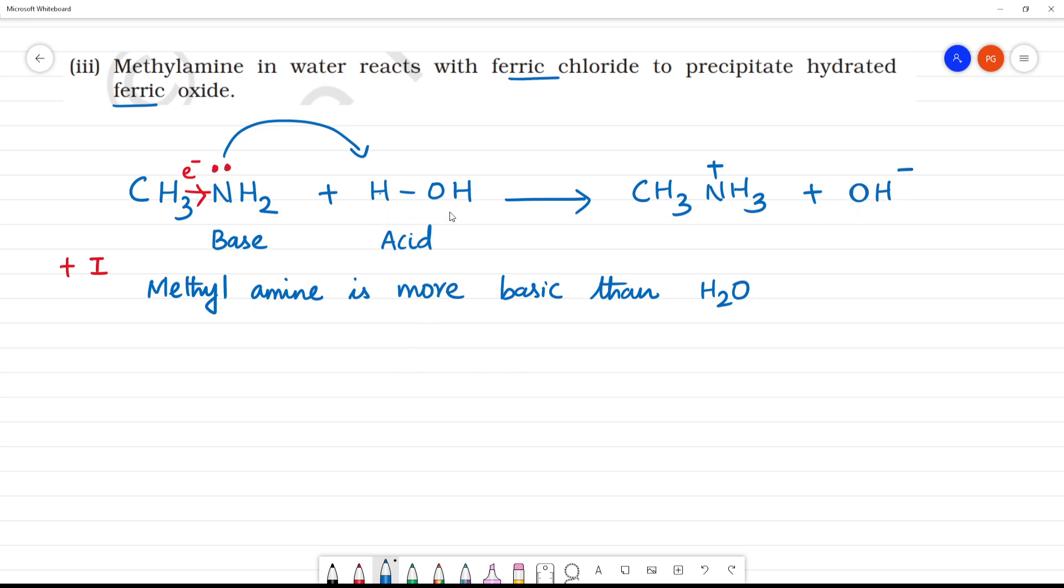Clear. Now, this will generate H plus ion. The H plus ion joins with nitrogen to form NH3 plus. We know that this methylamine is more basic. Water is actually neutral, but compared to methylamine, water acts as acid. H plus ion is liberated, so we get OH minus.